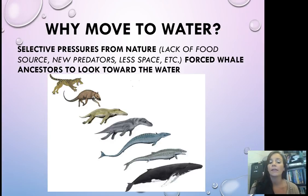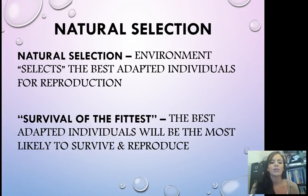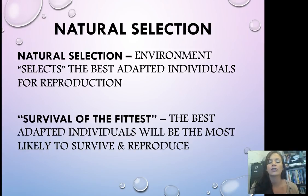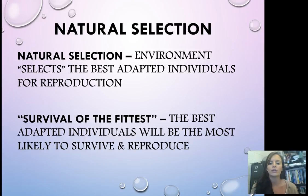So a couple other vocabulary terms: natural selection and survival of the fittest. In natural selection, the environment selects the best adapted individuals for reproduction — the ones most successful in the current environment are going to live, reproduce, have more offspring, and those traits will be passed on. Survival of the fittest is basically the same thing — a phrase used to describe natural selection where the ones best adapted will be most likely to survive and reproduce.